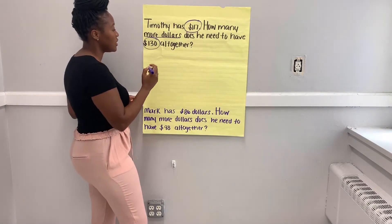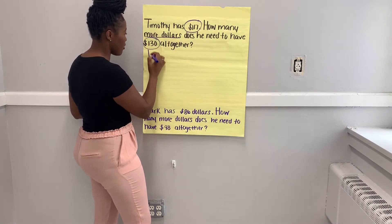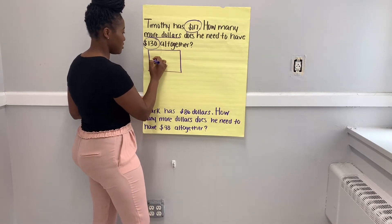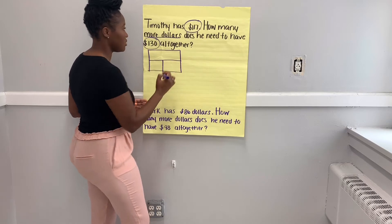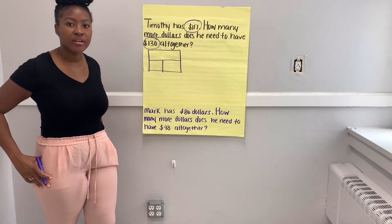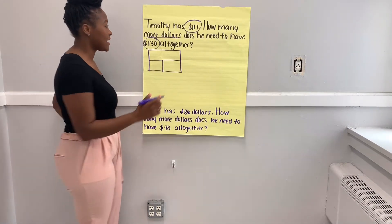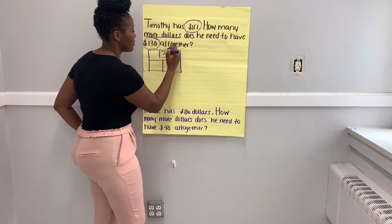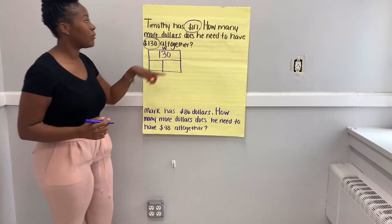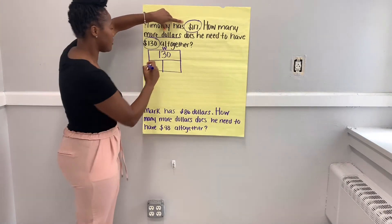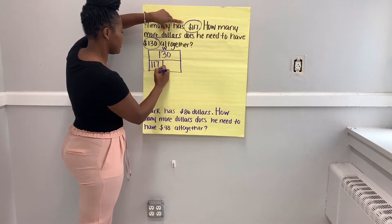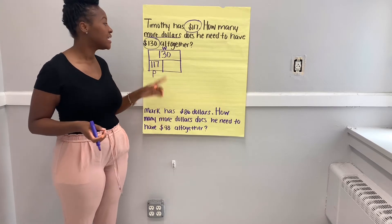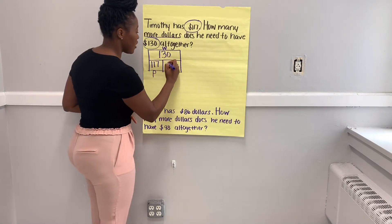So let's represent this using our part, part, whole box. How much money does he want altogether? Yes, $130 — so this is going to be our whole. And we know that he already has $117, so that's our part. We're trying to figure out how much more money he needs to get to our whole — that's our unknown.